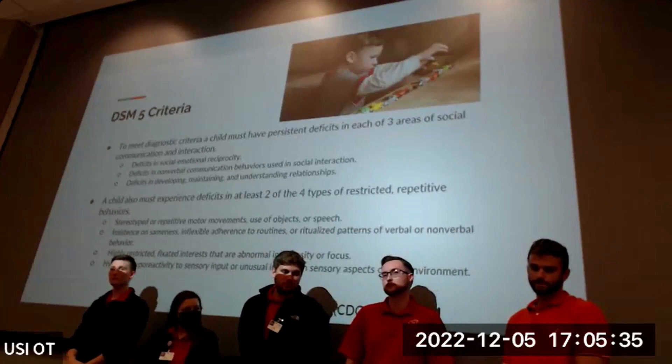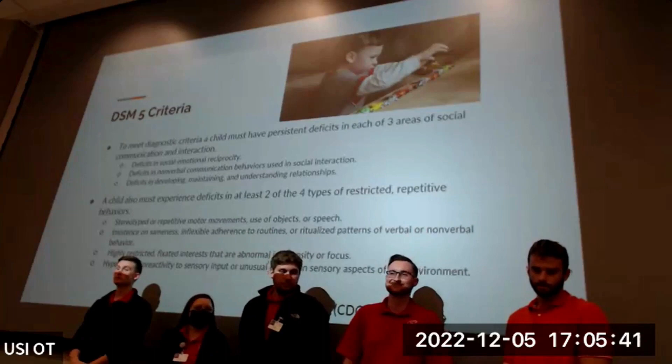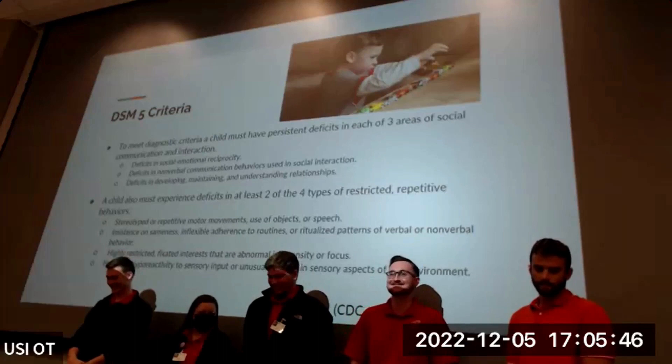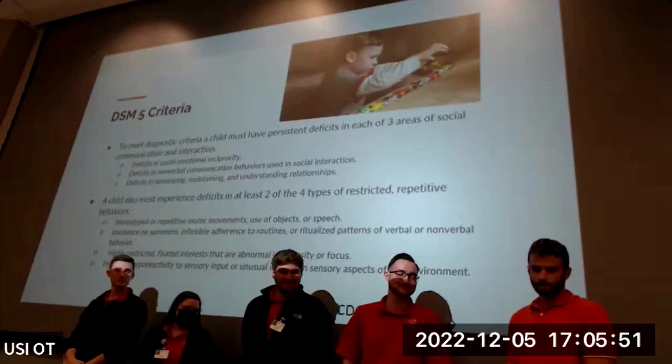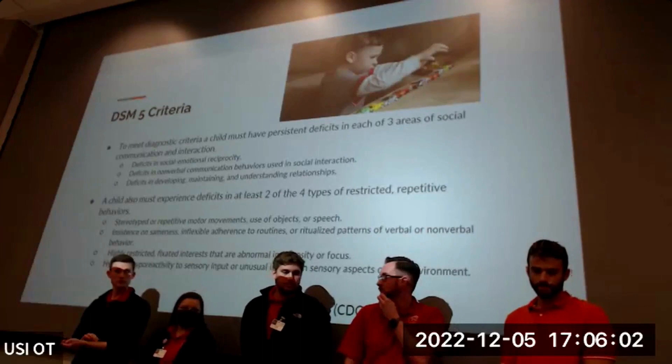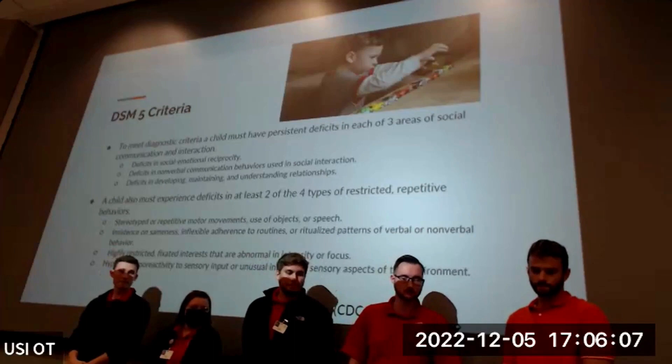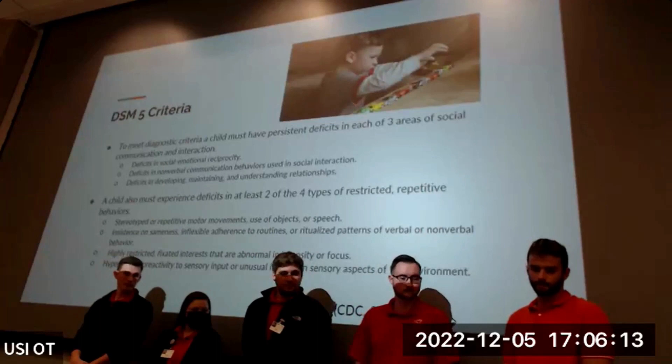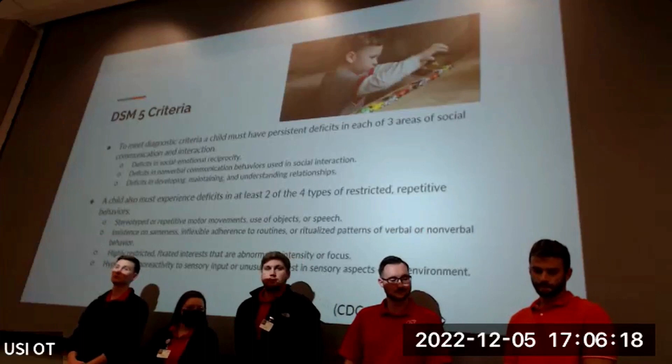To meet the DSM-5 diagnostic criteria, a child must have persistent deficits in each of three areas of social communication and interaction: deficits in social and emotional reciprocity, deficits in non-verbal communication behaviors used in social interaction, and deficits in developing, maintaining, and understanding relationships. A child must also experience deficits in at least two of the four types of restrictive repetitive behaviors, or RRBs, which include stereotyped or repetitive motor movements, use of objects or speech, insistence on sameness, inflexible adherence to routines or ritualized patterns of verbal or non-verbal behavior, highly restricted fixated interests that are abnormal in intensity or focus, and hyper- or hypo-reactivity to sensory input or unusual interest in sensory aspects of the environment.